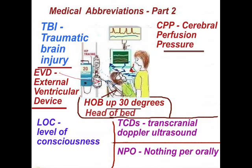TBI: traumatic brain injury. EVD: external ventricular device — that's the device placed in the ventricle so that excess CSF, or blood and CSF that accumulates, can be drained out.